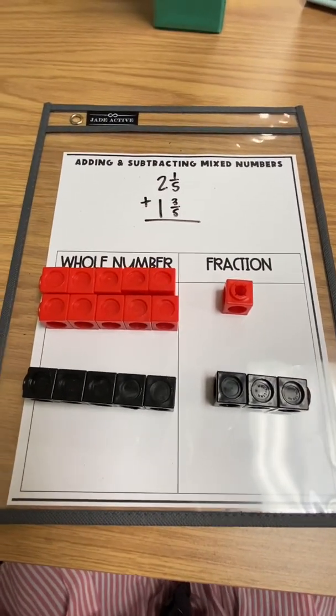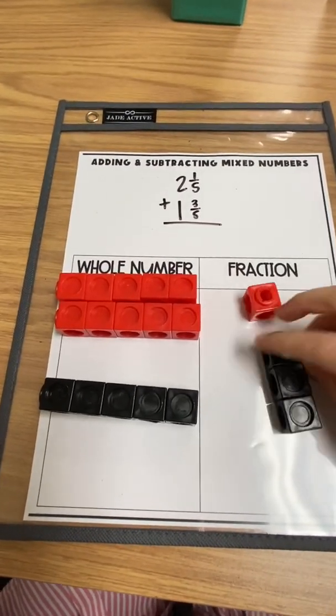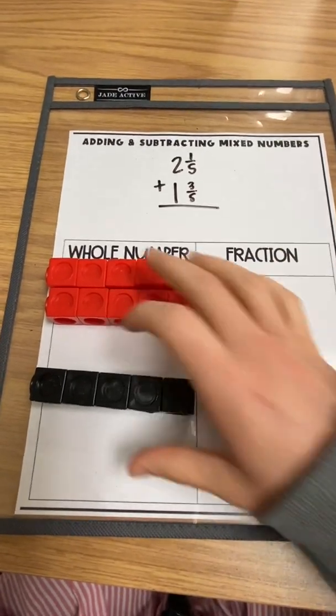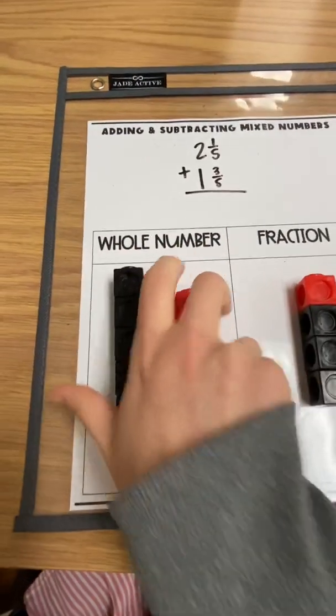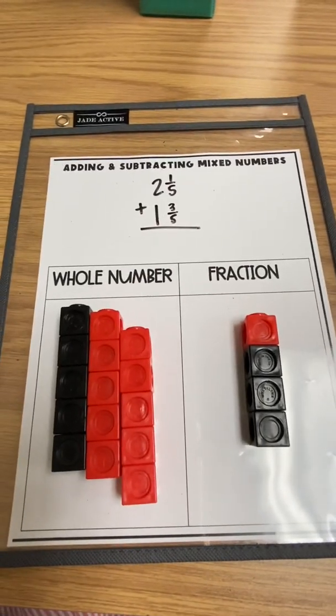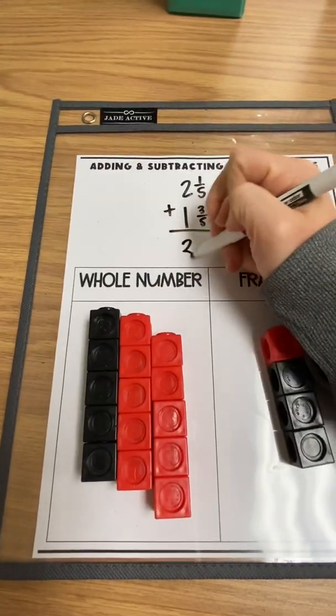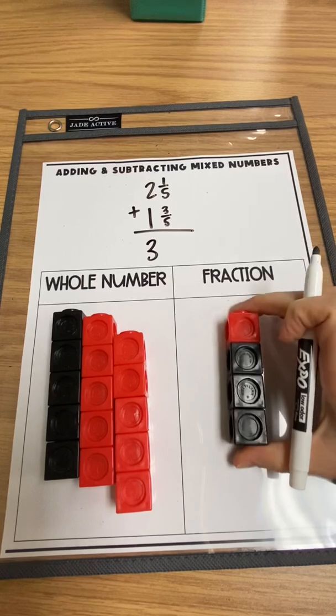And then students are able to combine since we're adding and they can put their 1 5th with the 3 5ths and their 2 holes with the 1 hole. And they are able to see that they get 3 holes and 4 5ths.